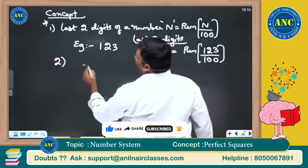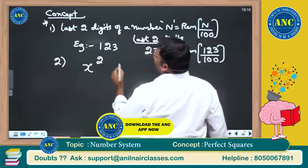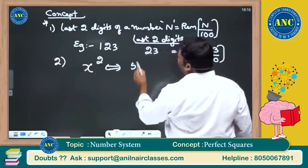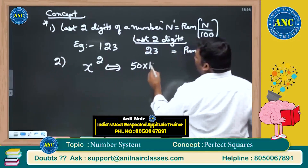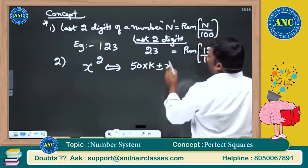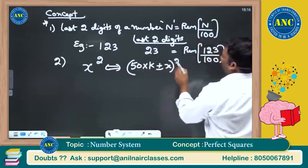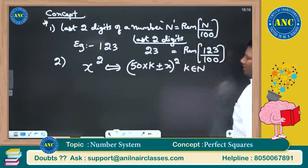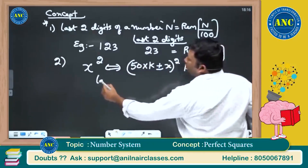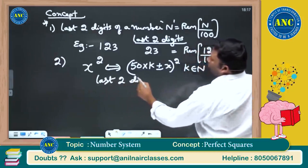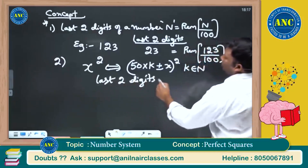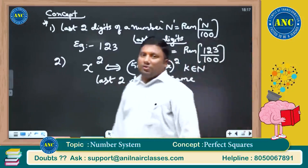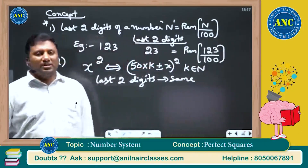Second concept: take any number x and square it. If a number is of the form (40k ± x) squared, where k is a natural number, the last two digits will be the same as x squared. Similarly, (50k ± x) squared will also have the same last two digits as x squared.